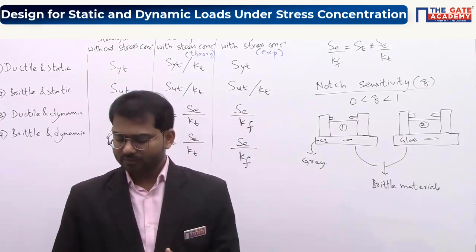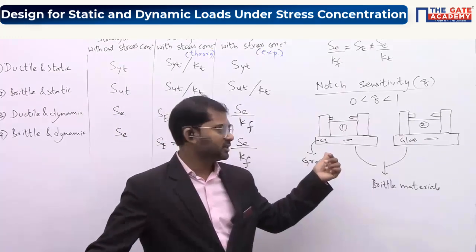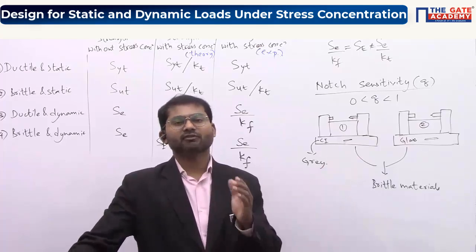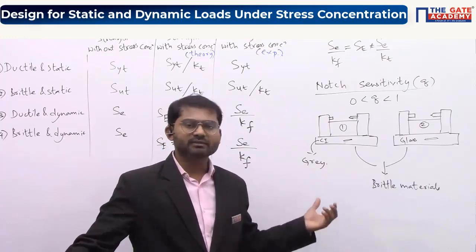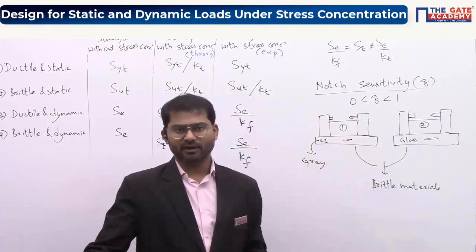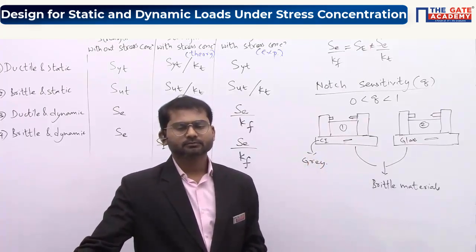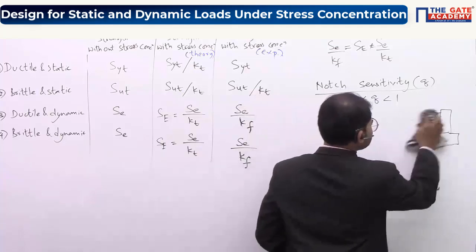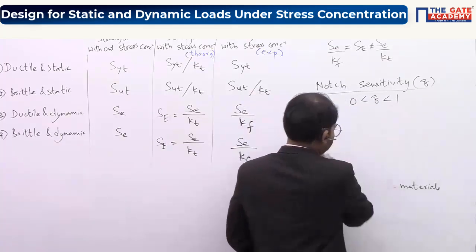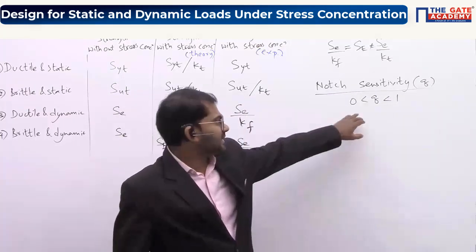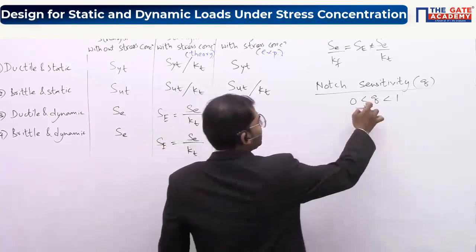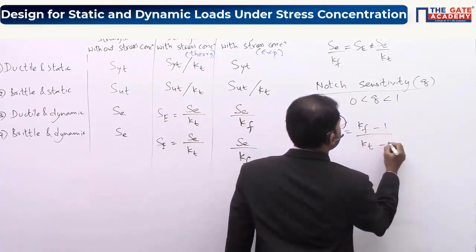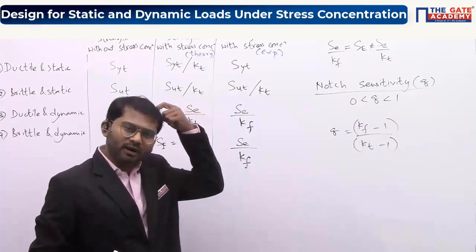To summarize the advantages of grey cast iron as lathe machine bed: first, it has less notch sensitivity — a lower value of Q — which helps reduce production cost by eliminating forming operations. Second, it has a very high damping coefficient, so vibration effects can be nullified to a greater extent. Notch sensitivity Q is an experimental value related to KT and KF by the formula: Q = (KF − 1) / (KT − 1).